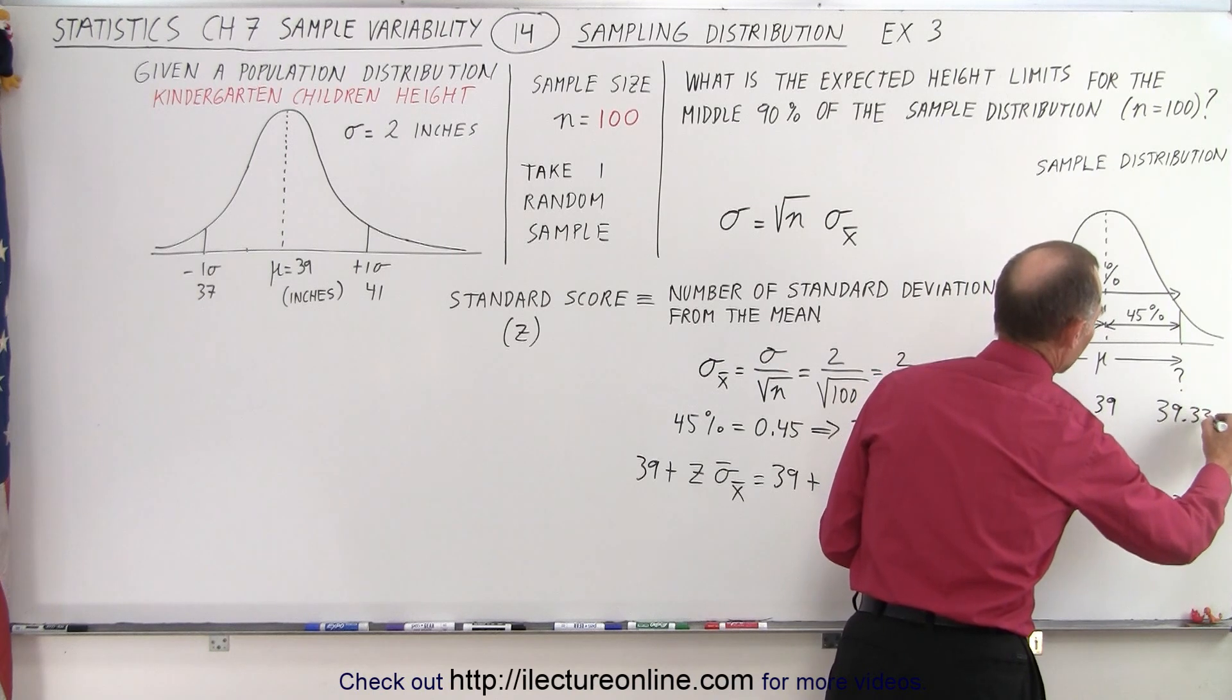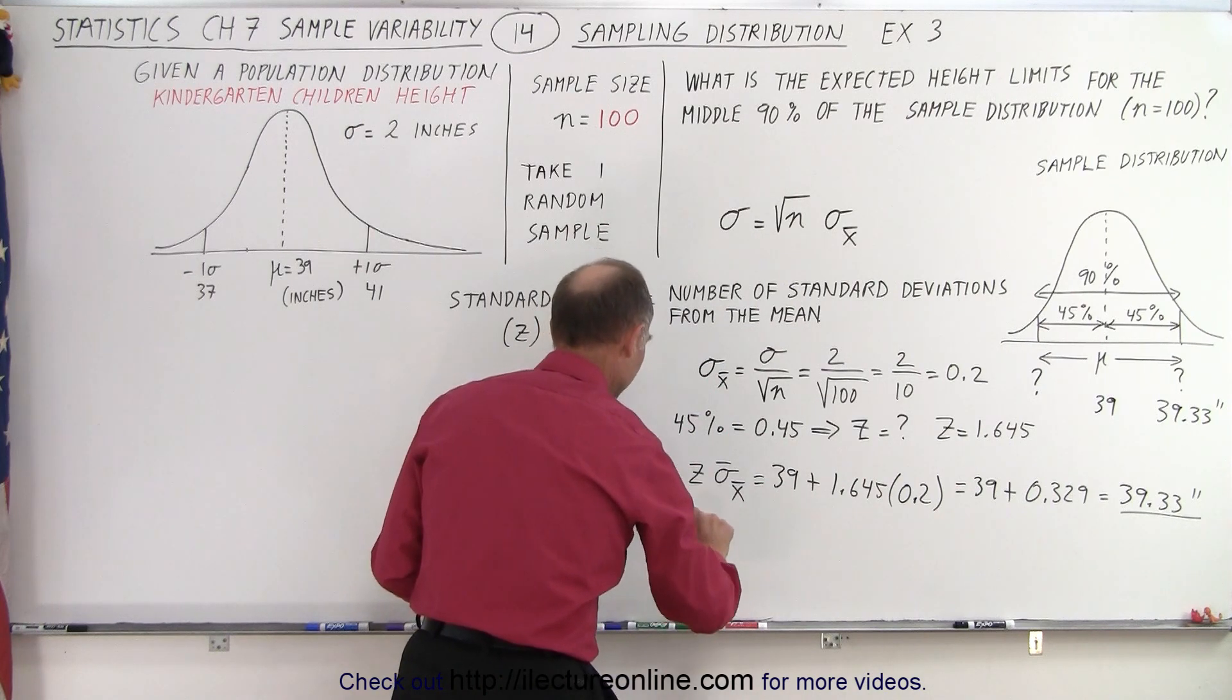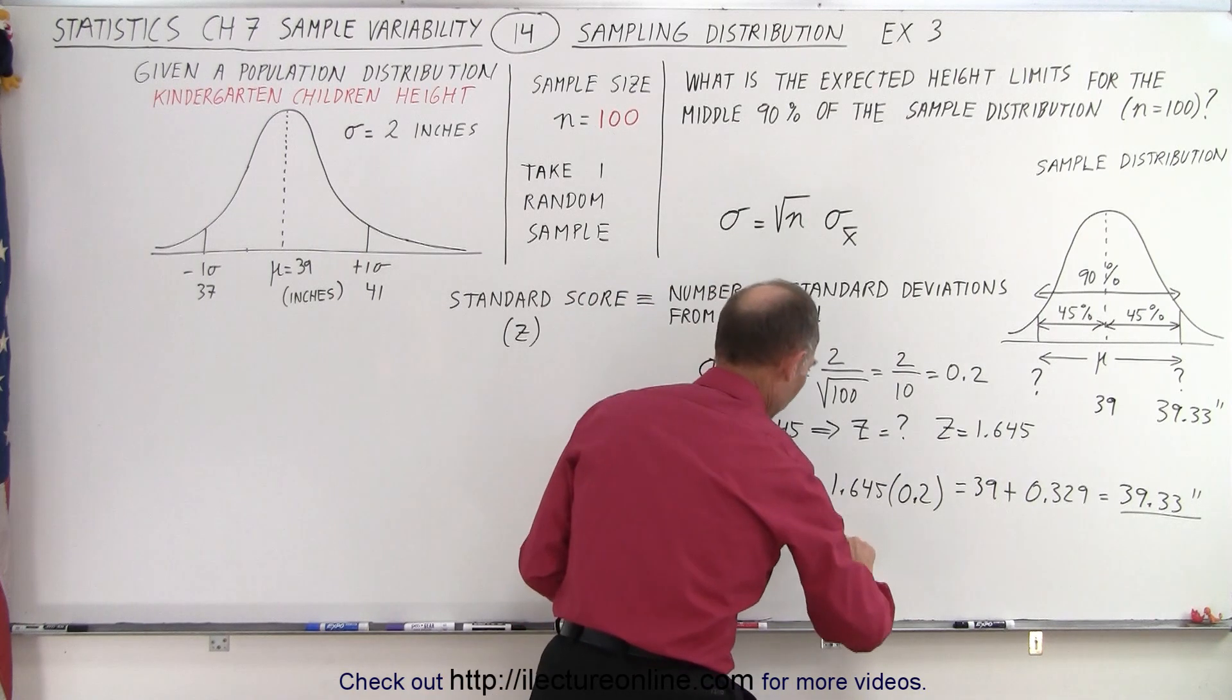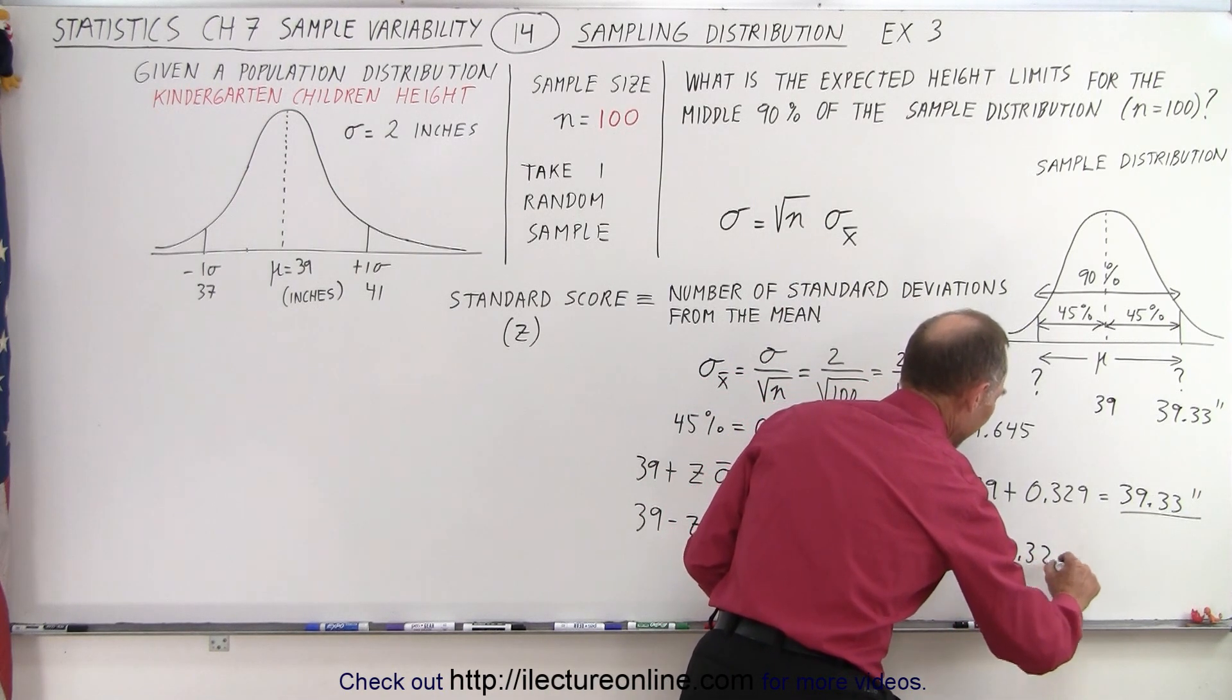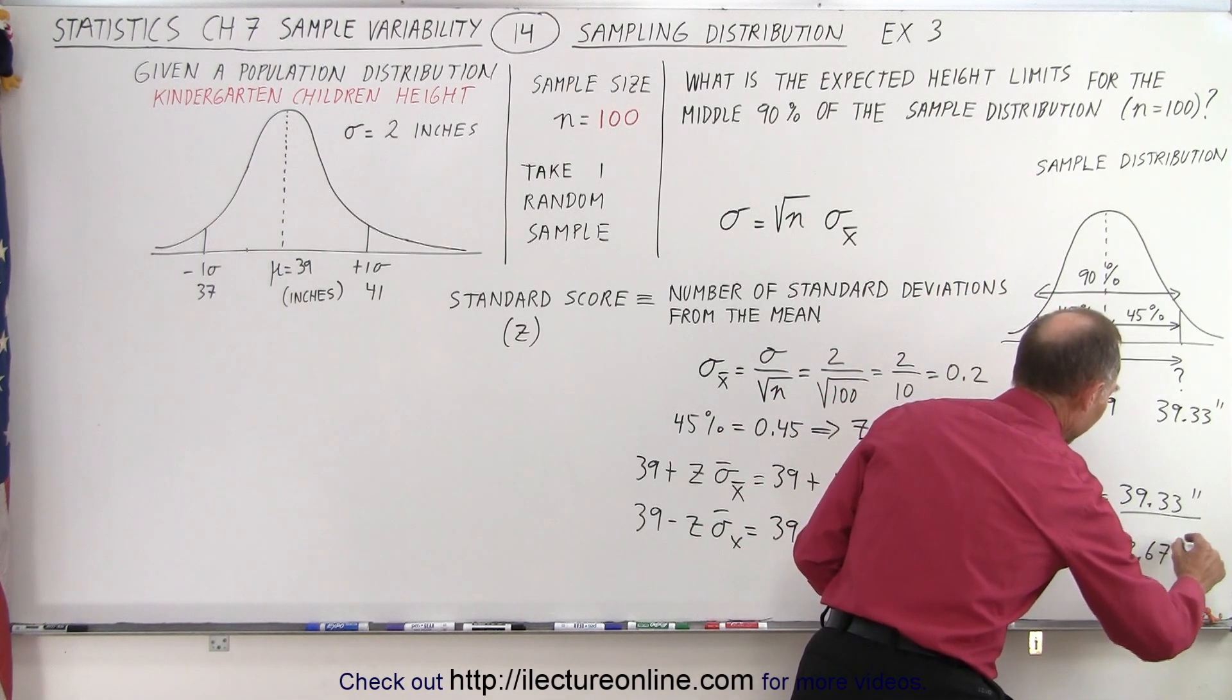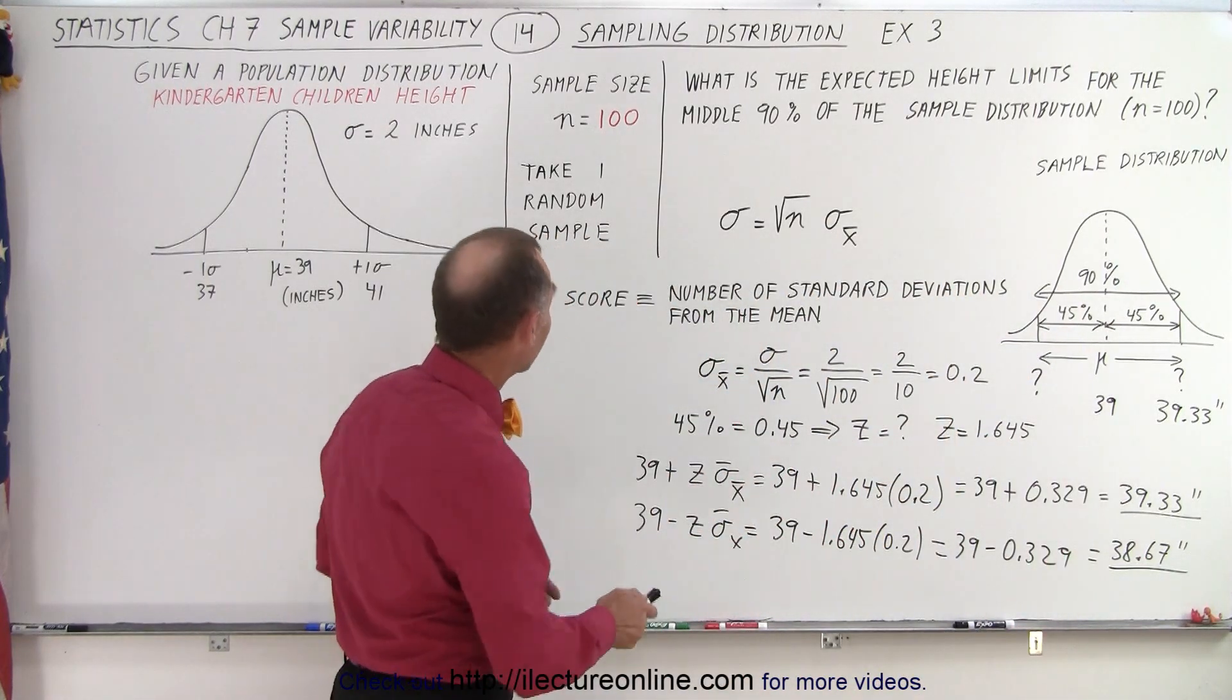And the same amount to the left side, so that means 39 minus z times the standard deviation which is equal to 39 minus 1.645 times 0.2, which is equal to 39 minus 0.329, essentially 0.33, so that's equal to 38.67 inches. So in other words there's 90% probability that if we take a sample size of 100 that the average of the sample size will fall between 39.33 and 38.67 inches.